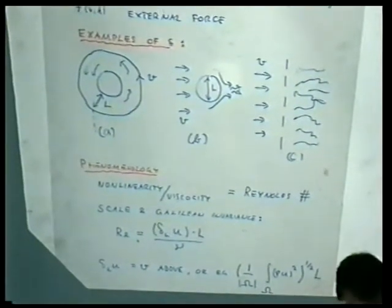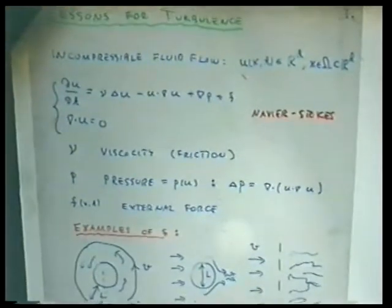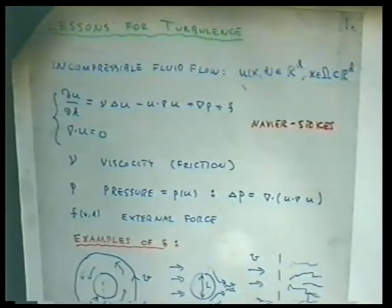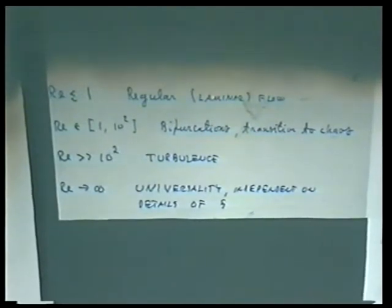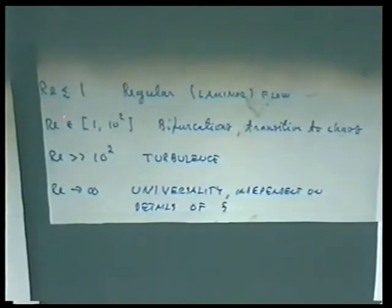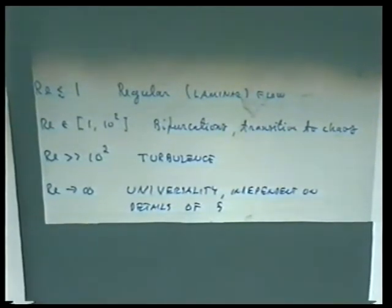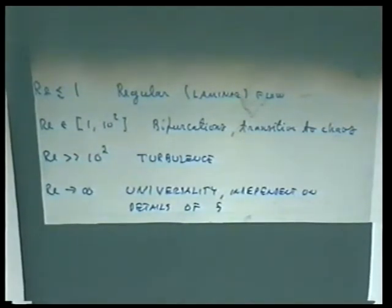What you observe is the following. When the Reynolds number is small — less than something of order unity — you have a regular laminar flow; nothing interesting is happening. When you start increasing the Reynolds number, you get bifurcations, and finally the flow becomes increasingly complicated and chaotic. Once the Reynolds number is very large — bigger than 10^2 — you get a very peculiar chaotic behavior which has the name turbulence.